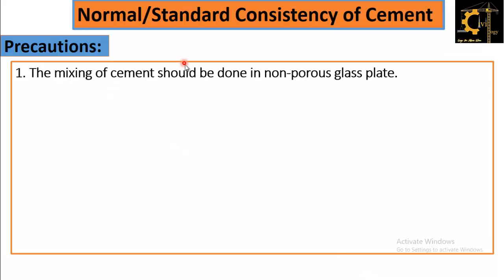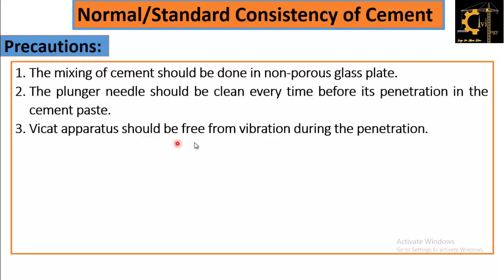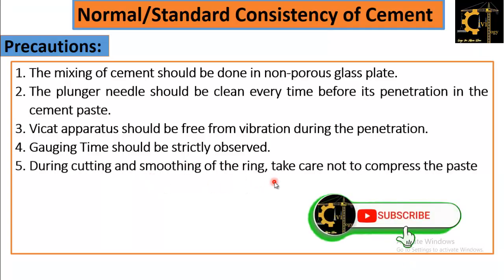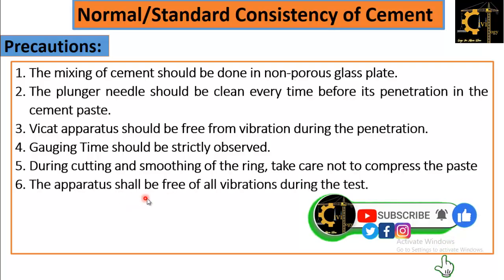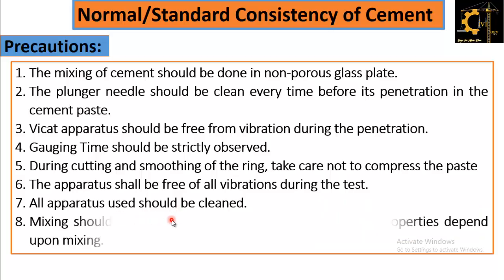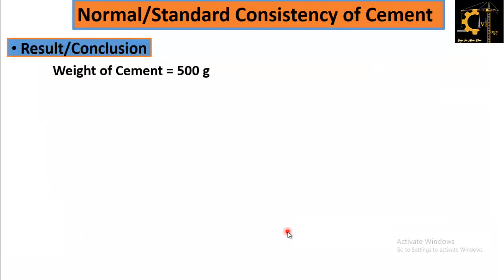Precautions: The mixing of cement should be done on a non-porous glass plate. The plunger needle should be cleaned every time before its penetration in the cement paste. The Vicat apparatus should be free from vibration during the penetration. Gauging time should be strictly observed. During cutting and smoothing of the mold, take care not to compress the paste. All apparatus used should be clean. Mixing should be done carefully, as 90 percent of cement paste properties depend upon mixing.